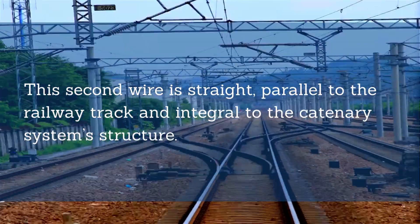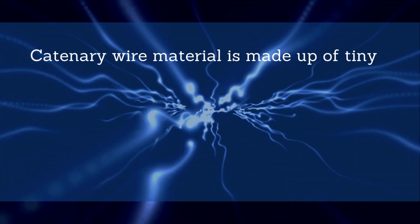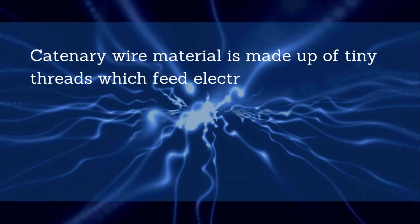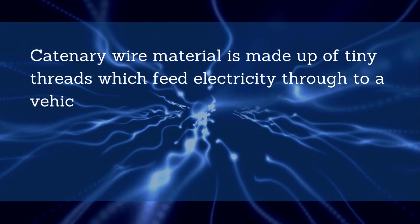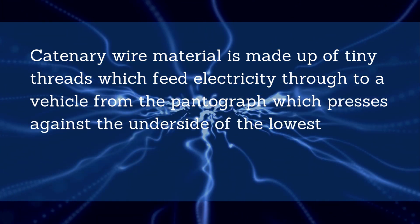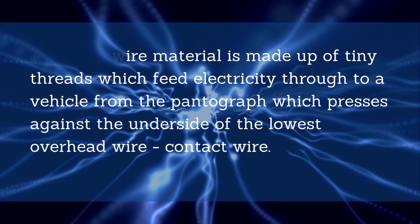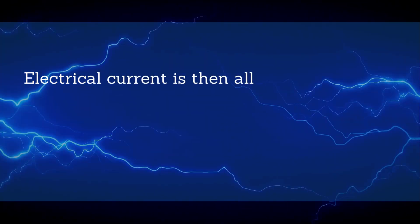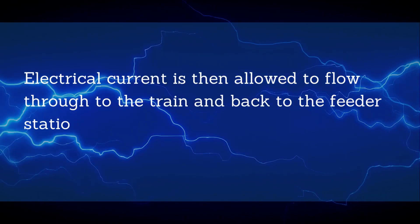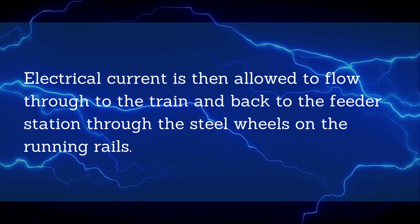The catenary wire material is made up of tiny threads which feed electricity through to a vehicle from the pantograph, which presses against the underside of the lowest overhead contact wire. Electrical current is then allowed to flow through to the train and back to the feeder station through the steel wheels on the running rails.